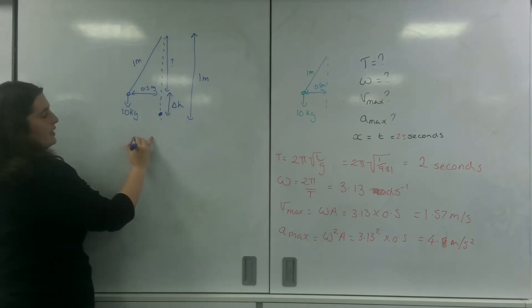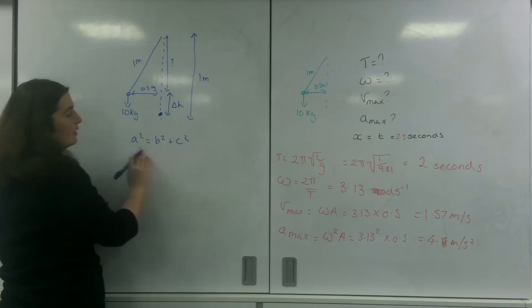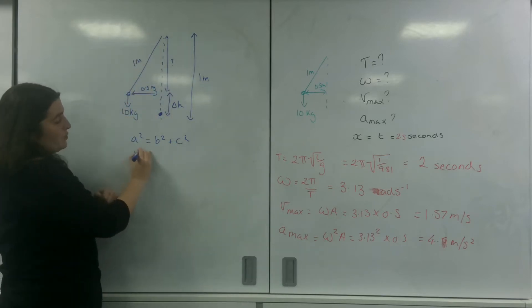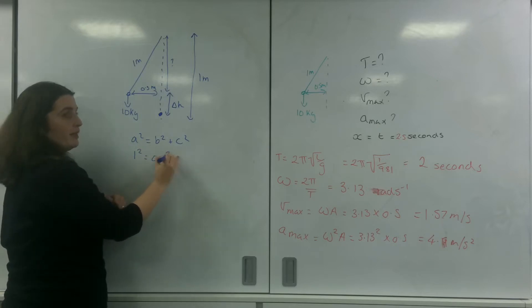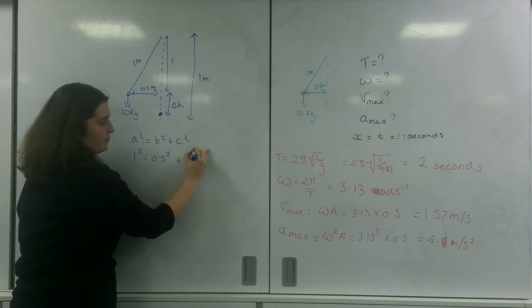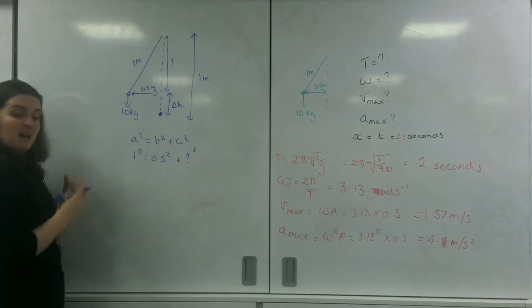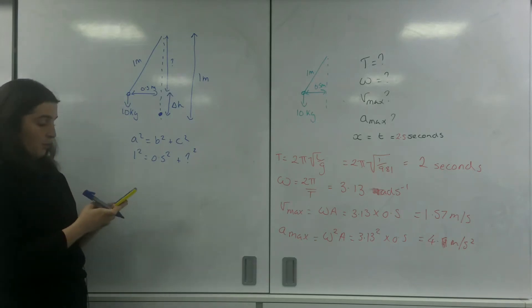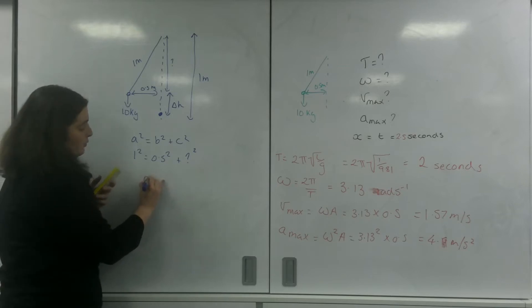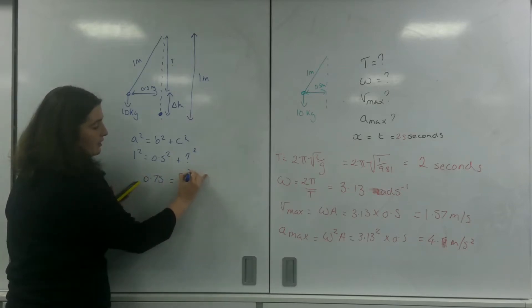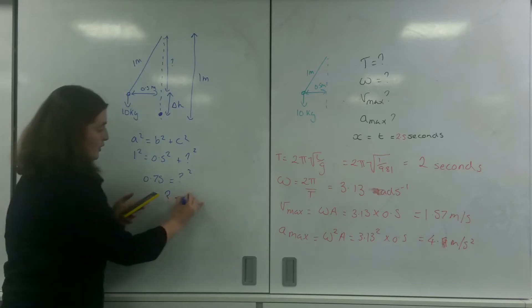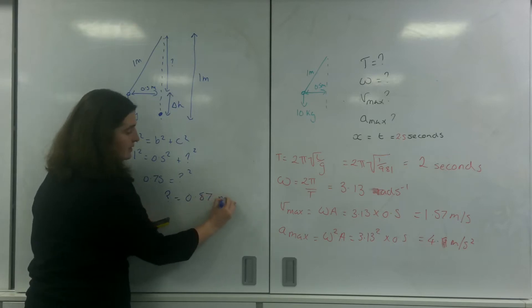So I know that A² equals B² plus C². Well, that is the hypotenuse, and these are the two sides. So I know that 1² is going to be 0.5² plus my unknown². I'm just going to rearrange it. So 1² minus 0.5² is 0.75 equals my question mark². So my question mark equals 0.87 meters.